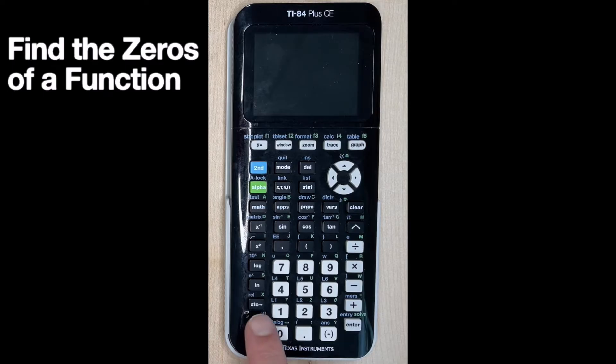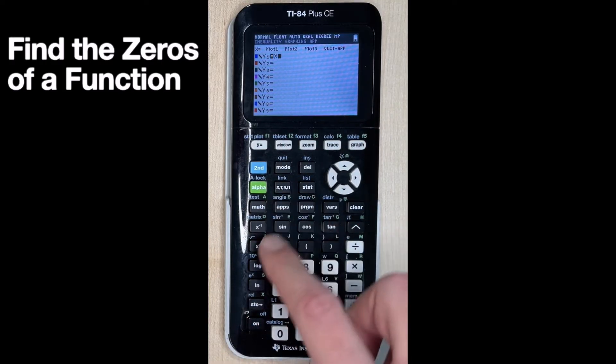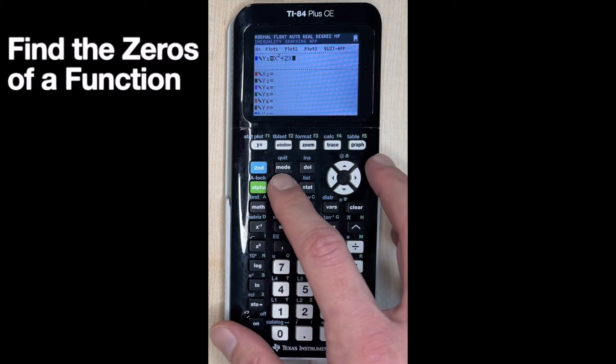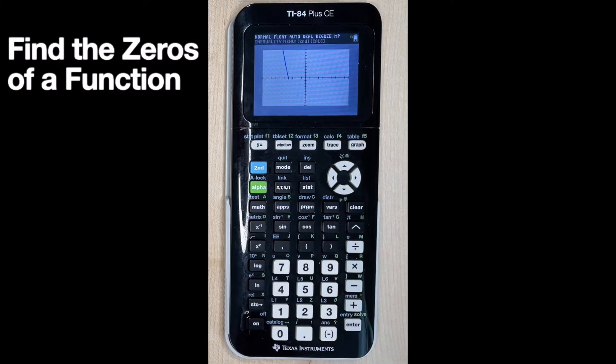as the intercepts. So let's turn our calculator on and go ahead and graph. Let's go into y equals and graph a quadratic. So let's graph x squared plus 2x minus 8, and let's hit graph and see what we get.